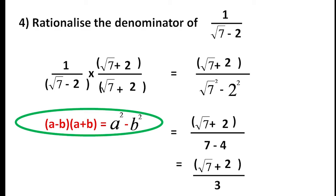If you take the same number, multiply and divide by it, then simplify the numerator and denominator. The a plus b into a minus b form works for all these questions — you can simplify the radical sign. After rationalizing, the denominator becomes an integer. If you have any comments, please leave them below the video. Thank you.